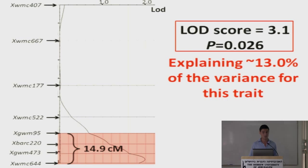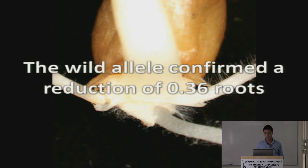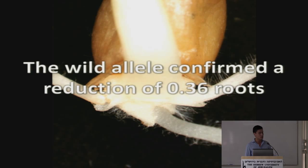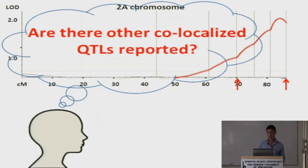This confirmed a reduction of 0.36 roots. So if Langdon carries this gene, it would reduce its phenotype by 0.36 roots. Once we got this result, we started with certain new questions.